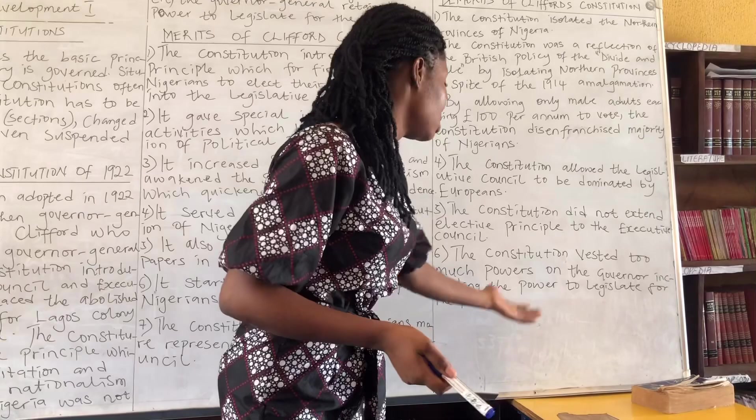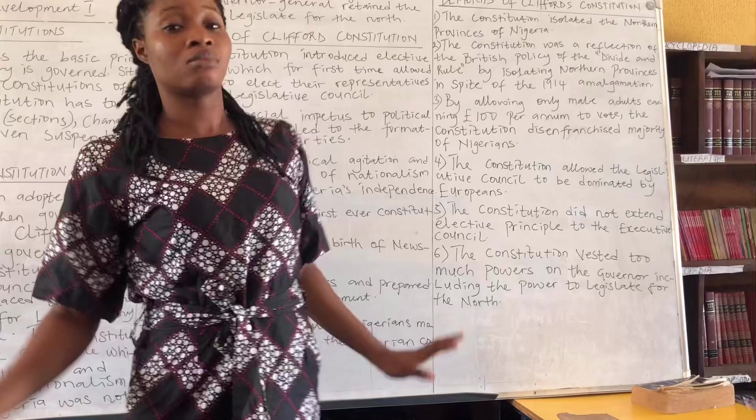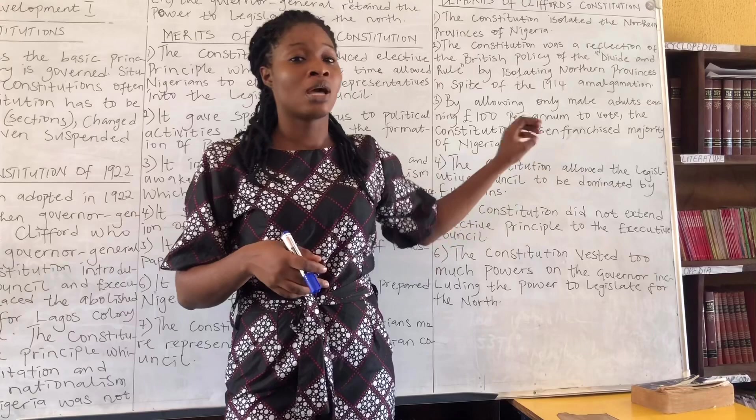Demerit six: the constitution vested too much power in the governor, including the power to legislate for the North. The governor had all the powers, including veto power — he could override decisions of the legislative council and that was final.